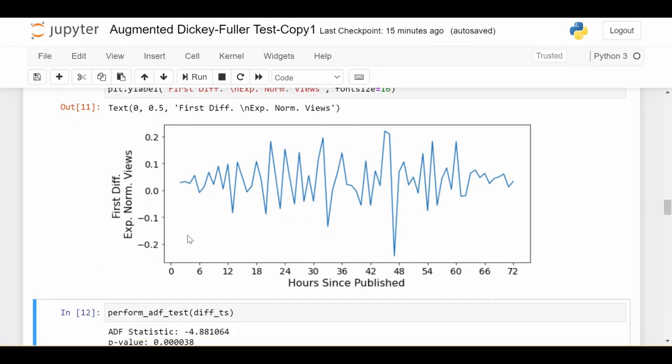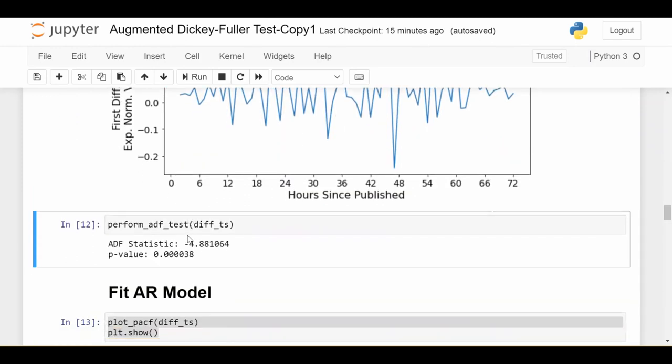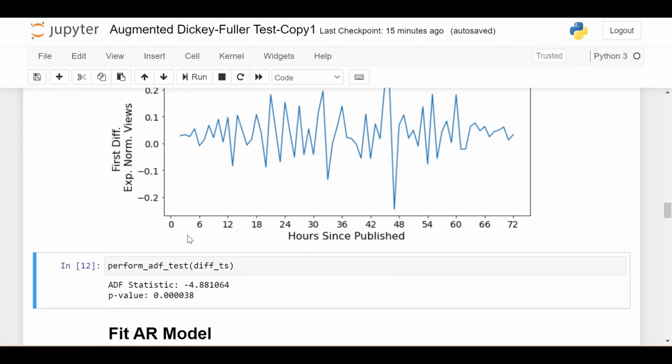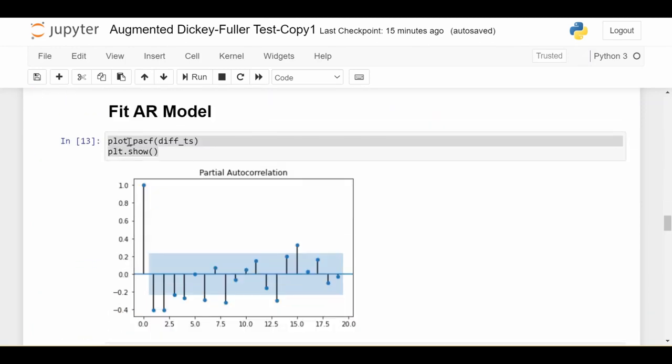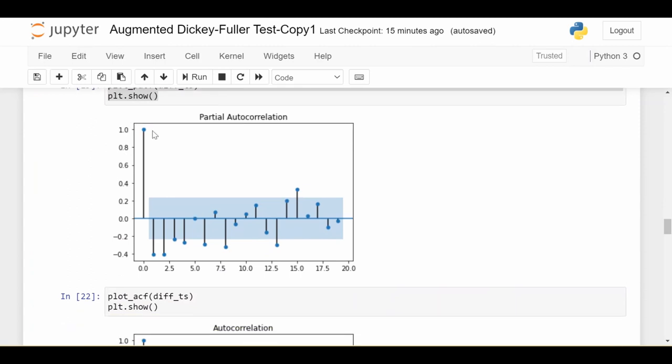Now we're going to fit a model to it. I compute the PACF for the transformed time series, which tells us the AR order we might want to use. We see that 1, 2, 3, 4 lags seem to be significant. I'm going to start with an AR-4 process.